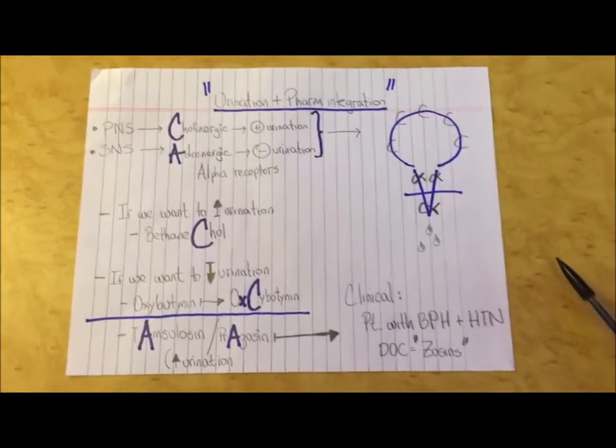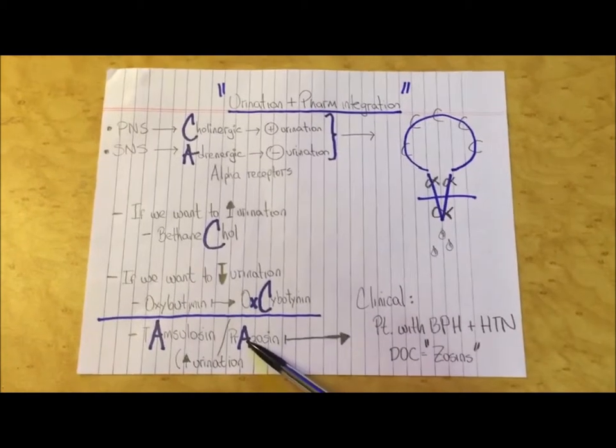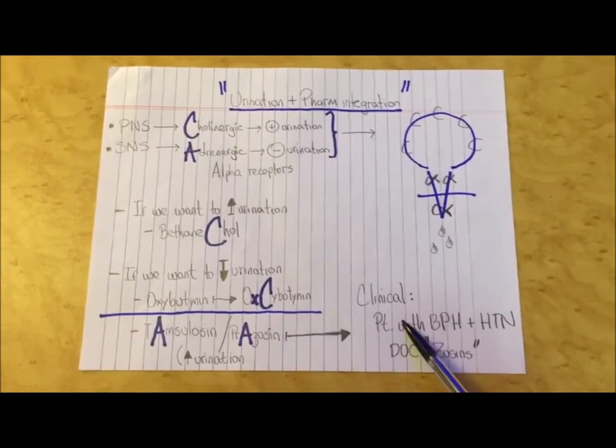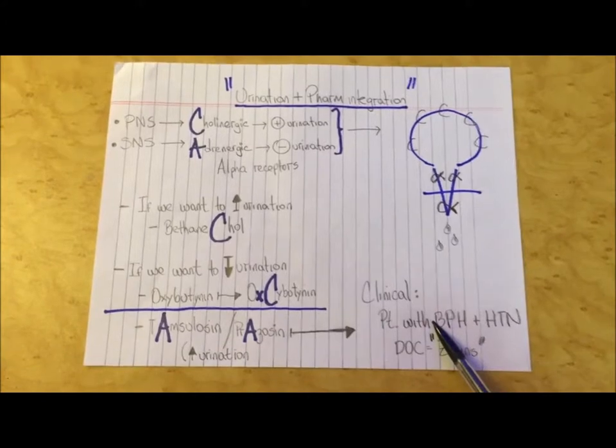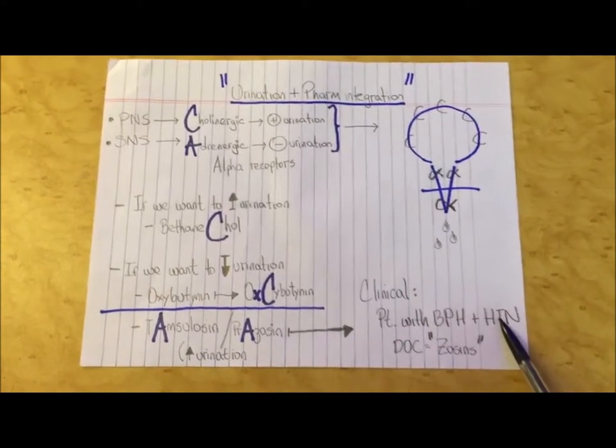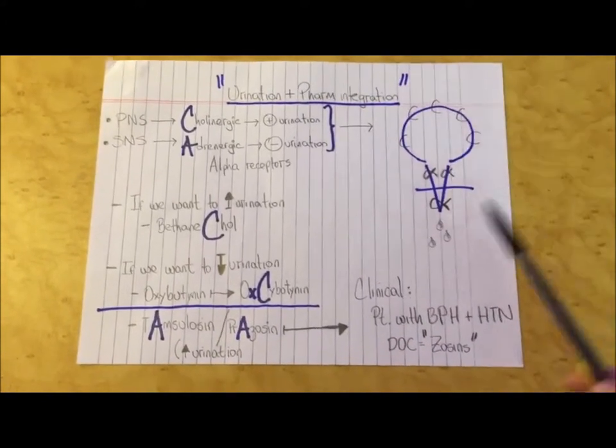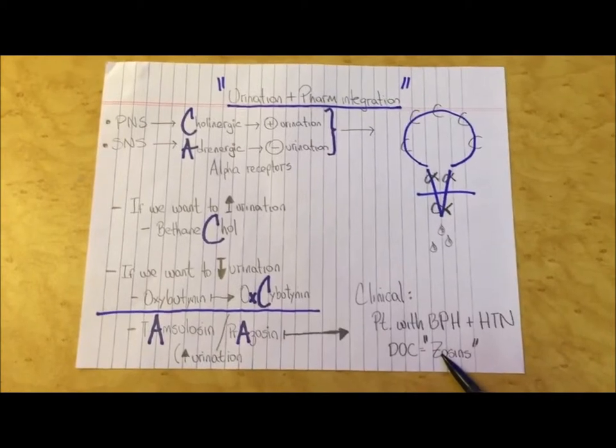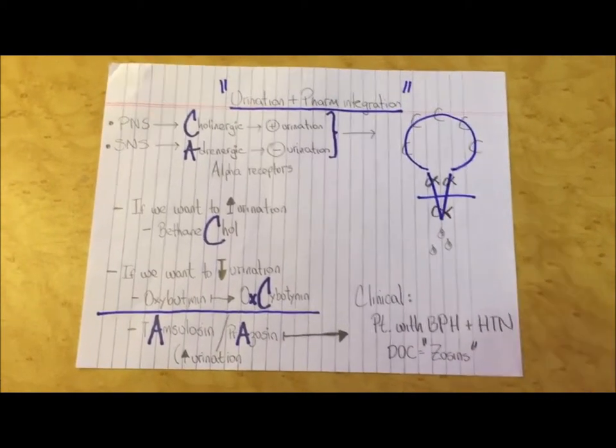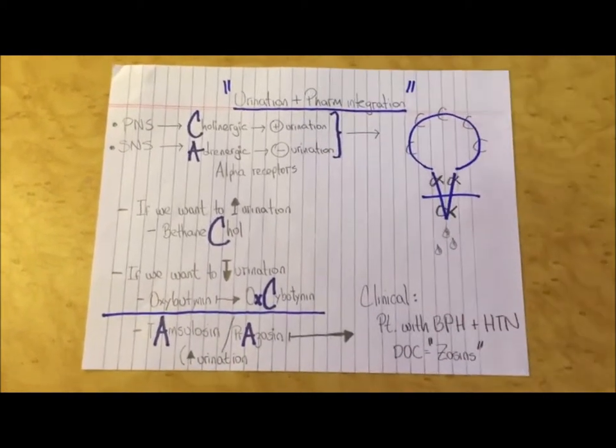A great scenario for the Step exam in which these drugs can be used is a patient presenting with BPH as well as hypertension. Here, our first choice is going to be the -osin drugs because they treat both conditions at the same time, and the Step really likes that.